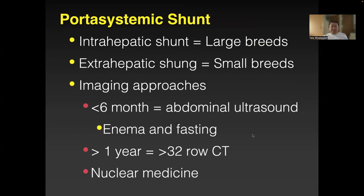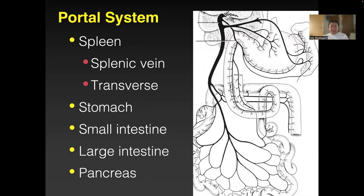For portosystemic shunt: large dogs are mostly intrahepatic — you can often see it. Small breeds under six months of age can be very difficult to find. Look for big vessels going longitudinally rather than transversely. Enema and fasting is a must before scanning. If more than one year of age, use a high-detector-count CT — multi-detector. Nuclear medicine is only available at Kitasato University in Japan. Portosystemic shunt vessels go right into the caudal vena cava.